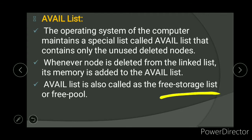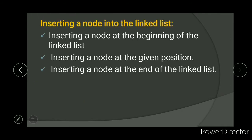The available list is also called as free storage list or free pool. When inserting a node into the linked list, we can insert a node at the beginning, at a particular given position, or at the end of the linked list.